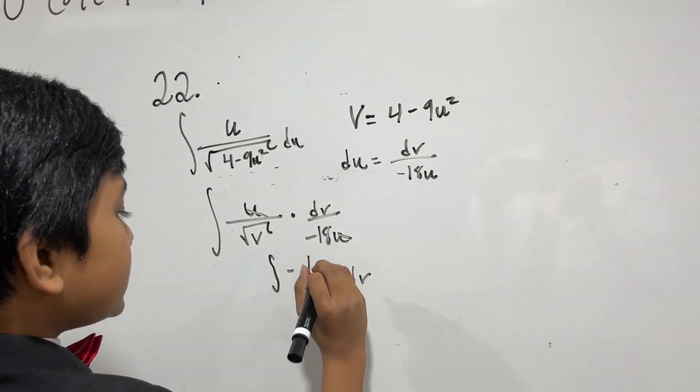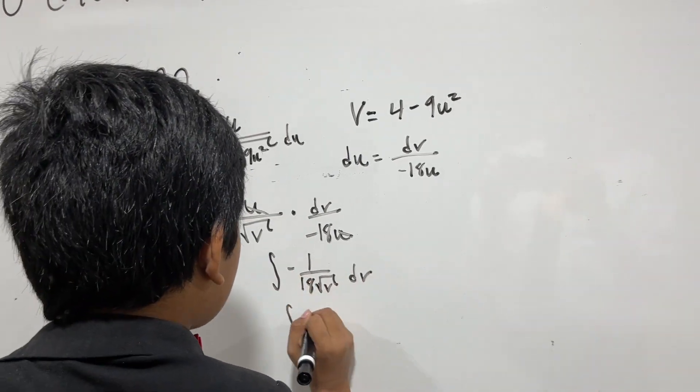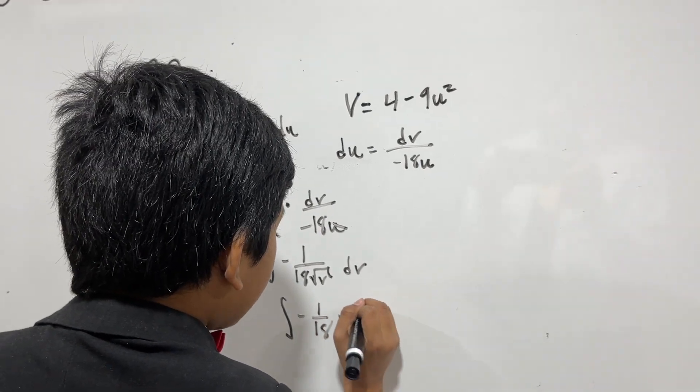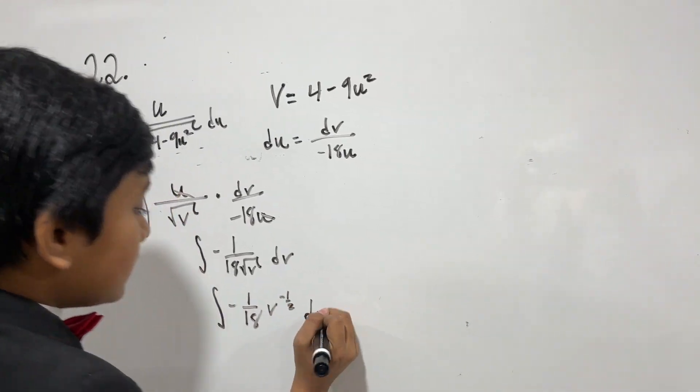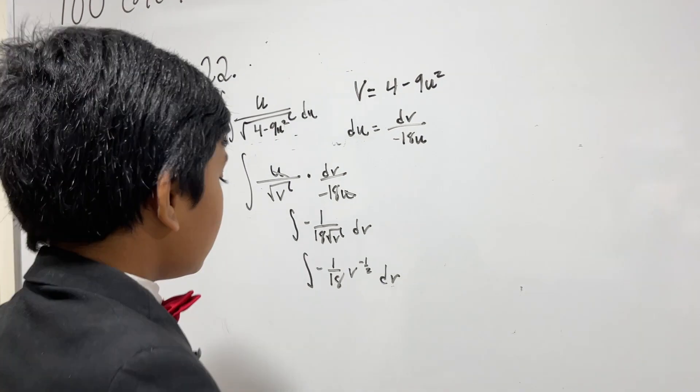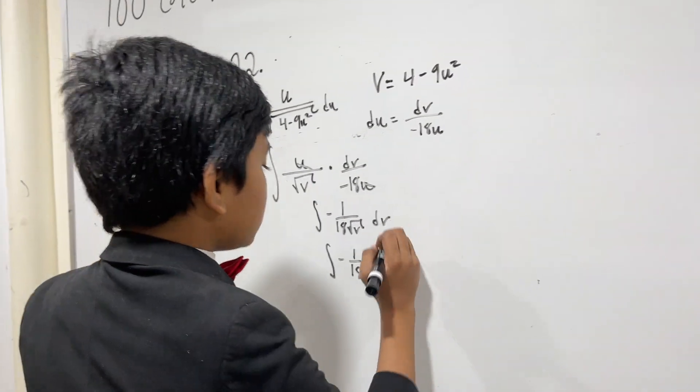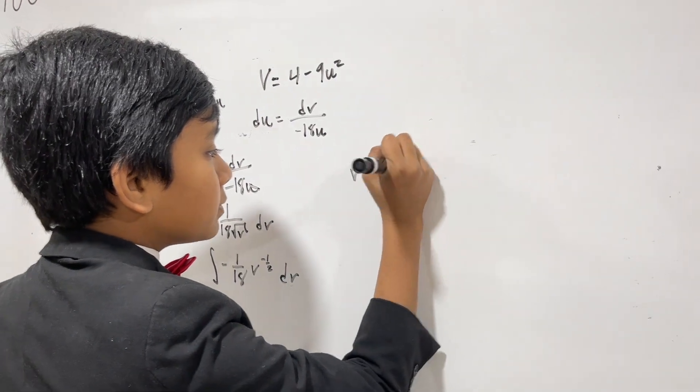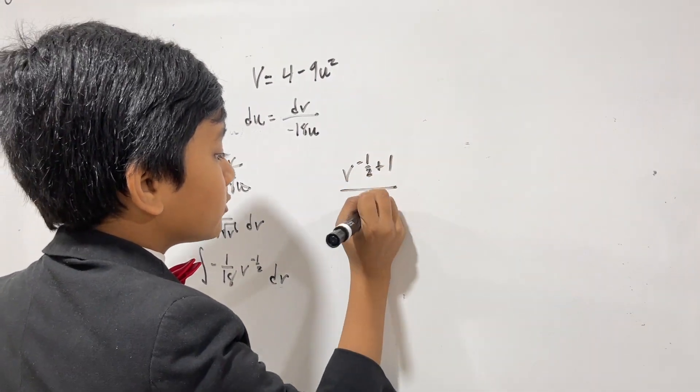Now, bringing this up, this is actually minus 1 over 18, v to the minus 1 half. Now, we use the reverse power rule. So, reverse power ruling this, we get v to the minus 1 half plus 1 over 1 minus 1 half.